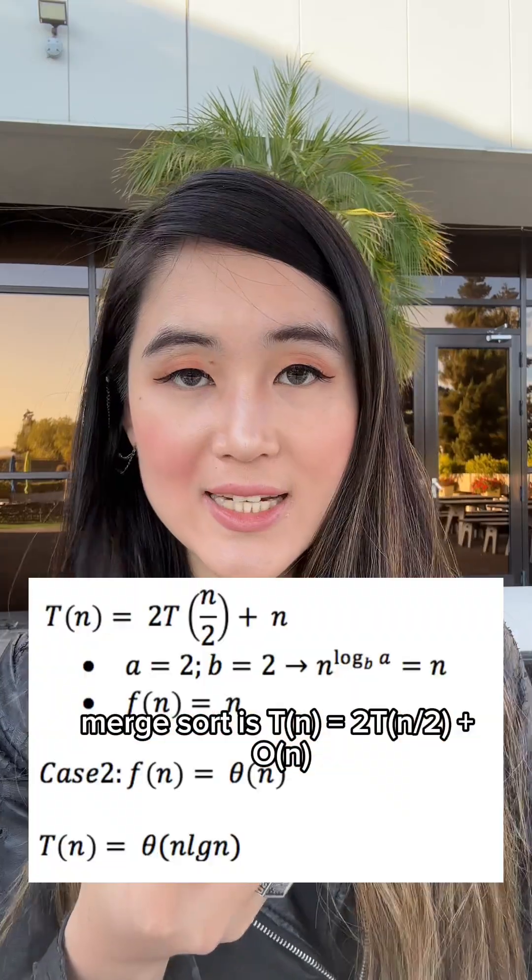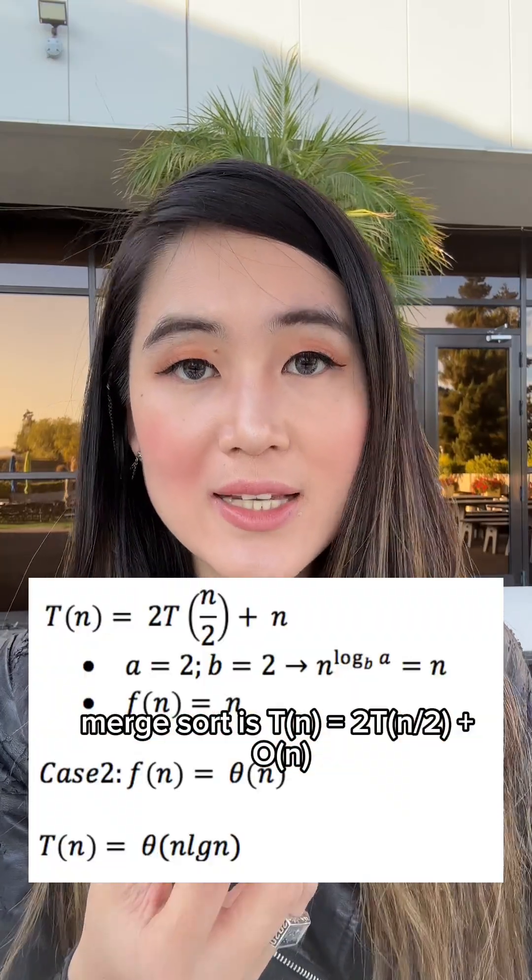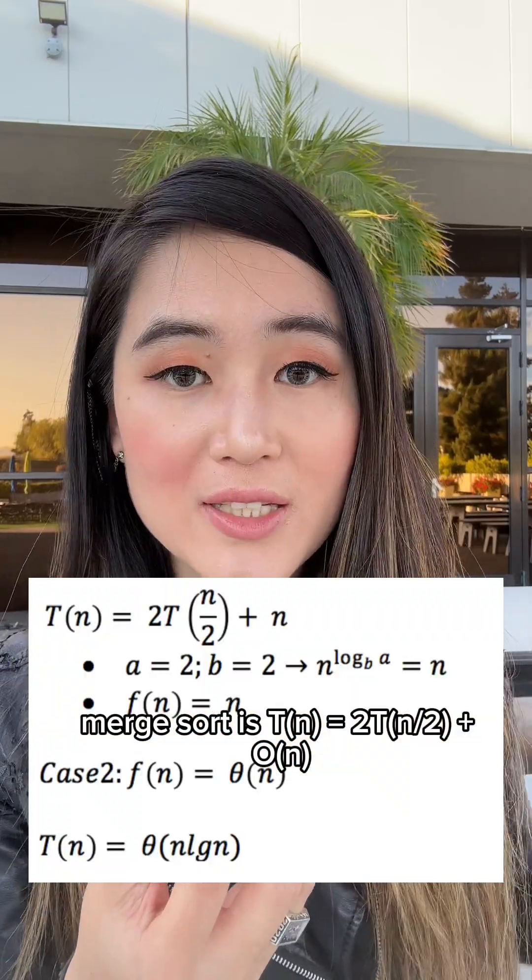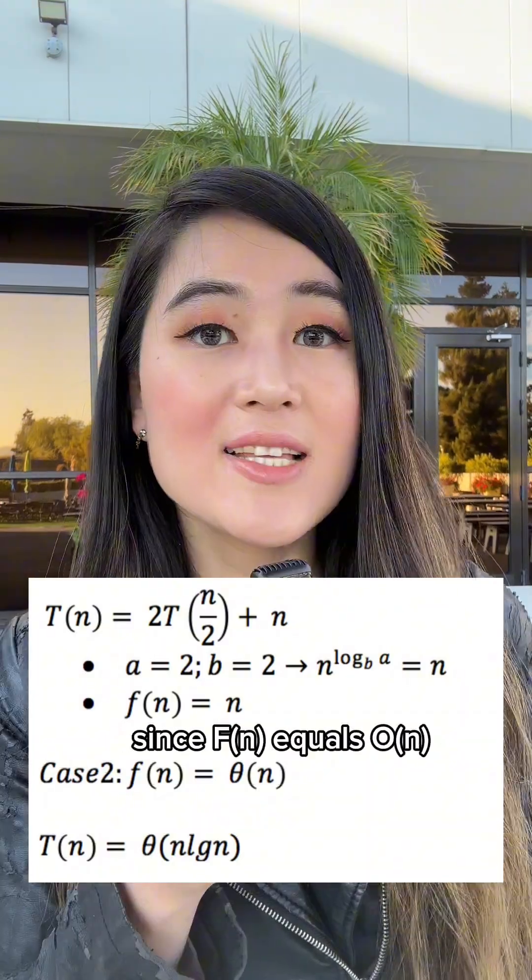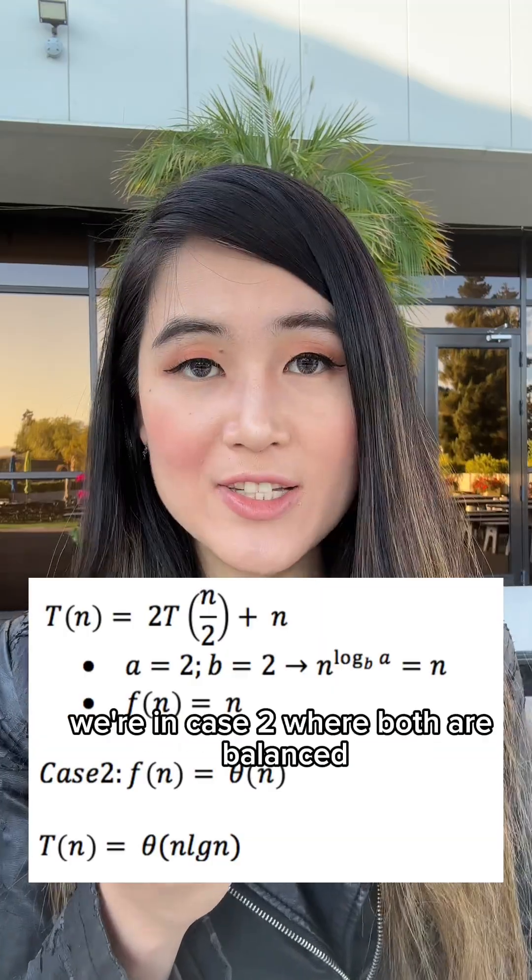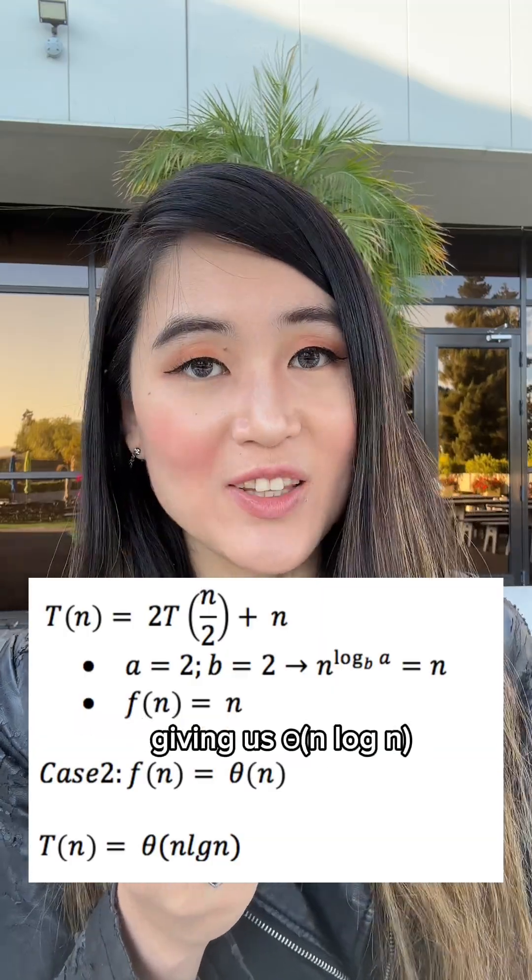For example, merge sort is T(n) equals 2 times T(n/2) plus O(n). Here, a equals 2 and b equals 2, so n to the power of log base 2 of 2 is n. Since f(n) equals O(n), we're in case 2 where both are balanced, giving us theta of n log n.